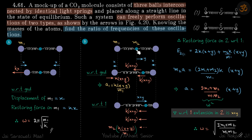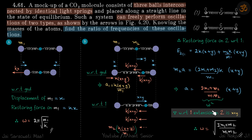The displacement of carbon with respect to ground was y, but with respect to particle 1 the displacement of carbon is x + y, because we add particle 1's displacement in the opposite direction — particle 1 moved left by x, so relative to it, carbon moved right by x + y. Since the restoring force on carbon with respect to particle 1 is proportional to (x + y), this is the equation of SHM. This gives ω₂, and from ω₁ and ω₂ we can find the ratio of frequencies.